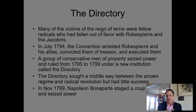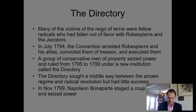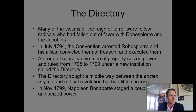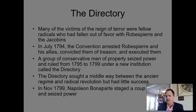The Directory is basically a middle way — a legislative body elected from men of property, with a group of five holding executive power. It devolved into corrupt rule, and in 1799, Napoleon Bonaparte stages a coup d'état, a seizure of power.